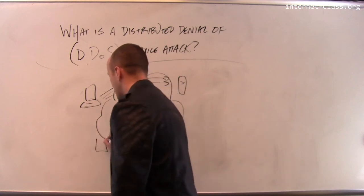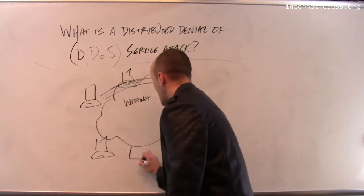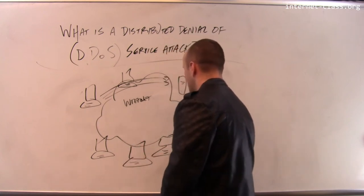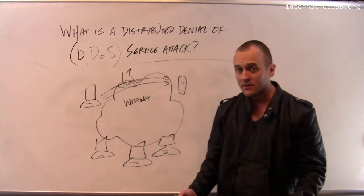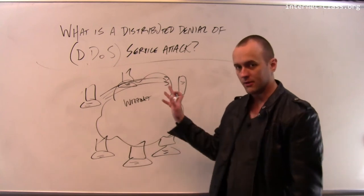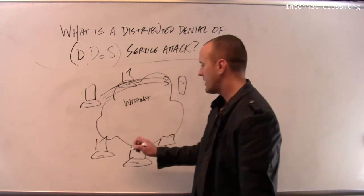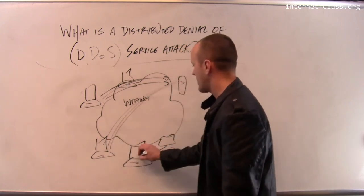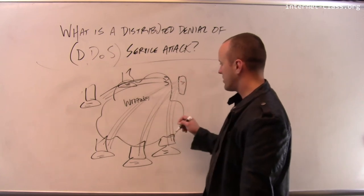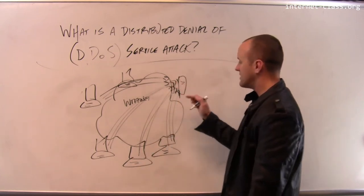In a distributed denial of service attack, the attacker leverages access to lots of different computers on the internet. This could be hundreds of computers, thousands of computers, tens of thousands of computers. They will have all of those computers — either all together or taking turns in different ways — generate illegitimate requests for the target website. This can be a lot more effective for two reasons.